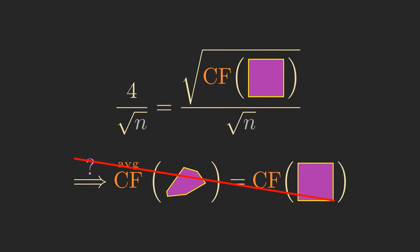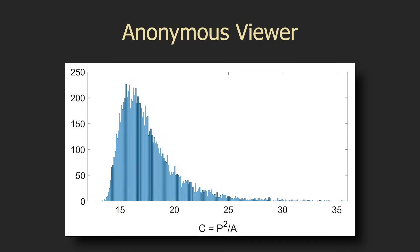But this isn't actually true. One viewer sent me this histogram that plots the compactness factor of random Voronoi cells, finding that the average is about 17.69, just above the value for a square, which is 16.